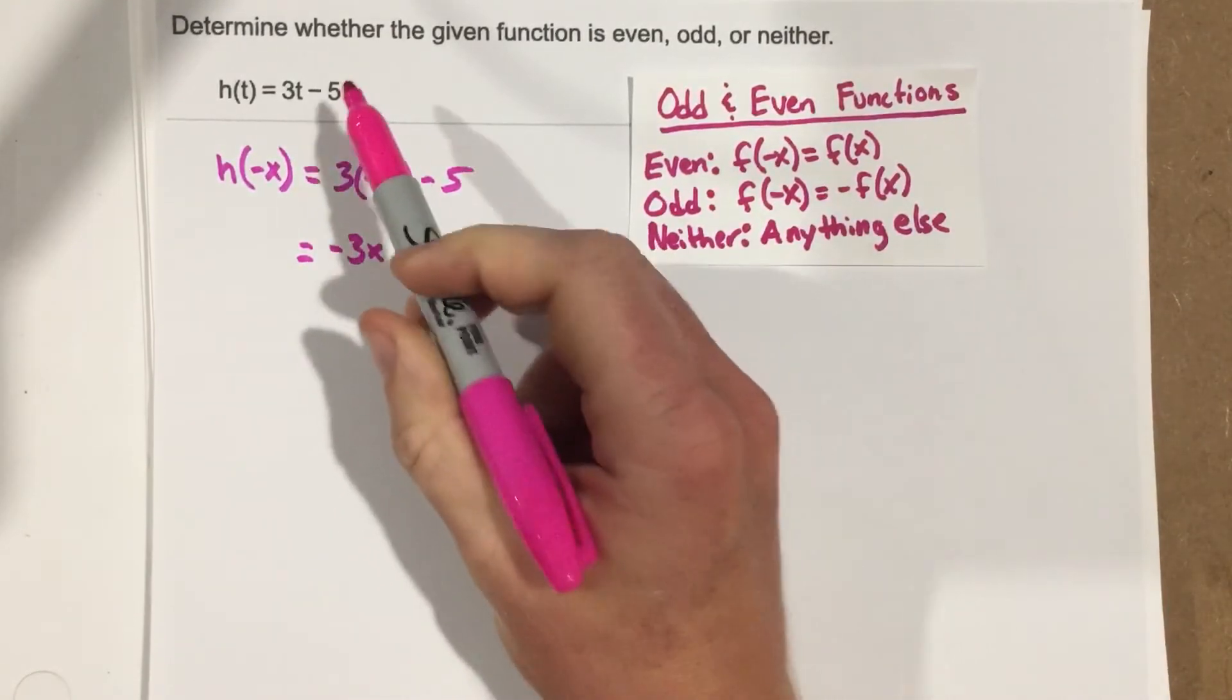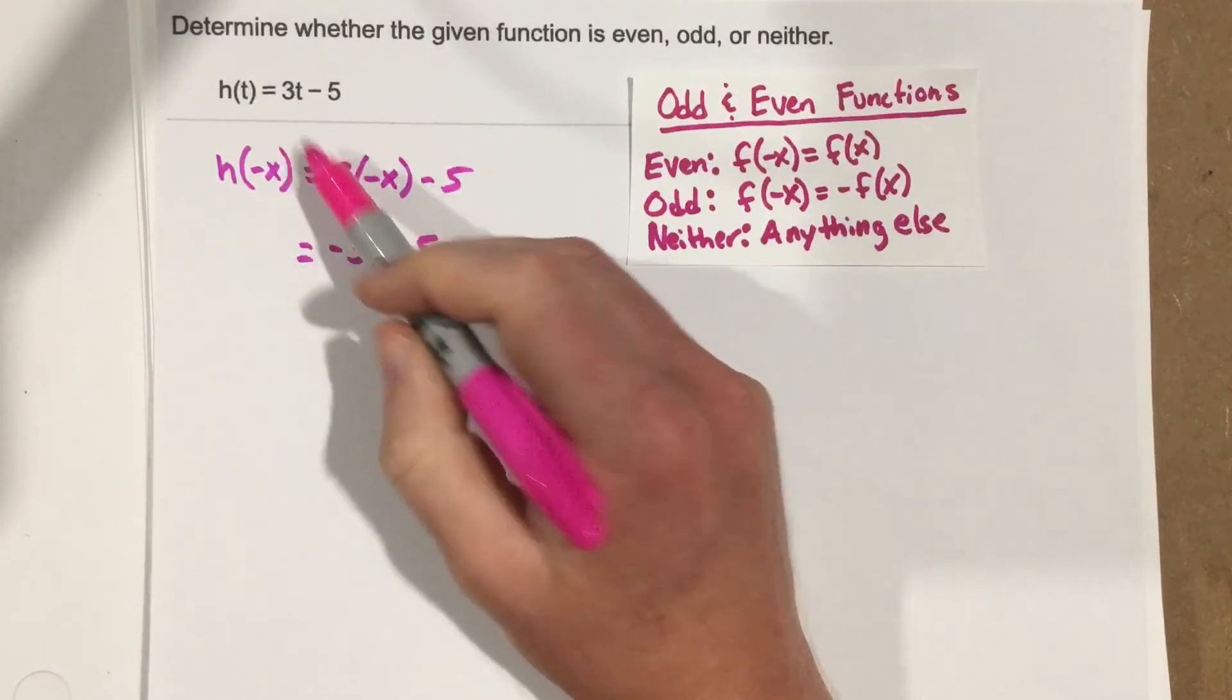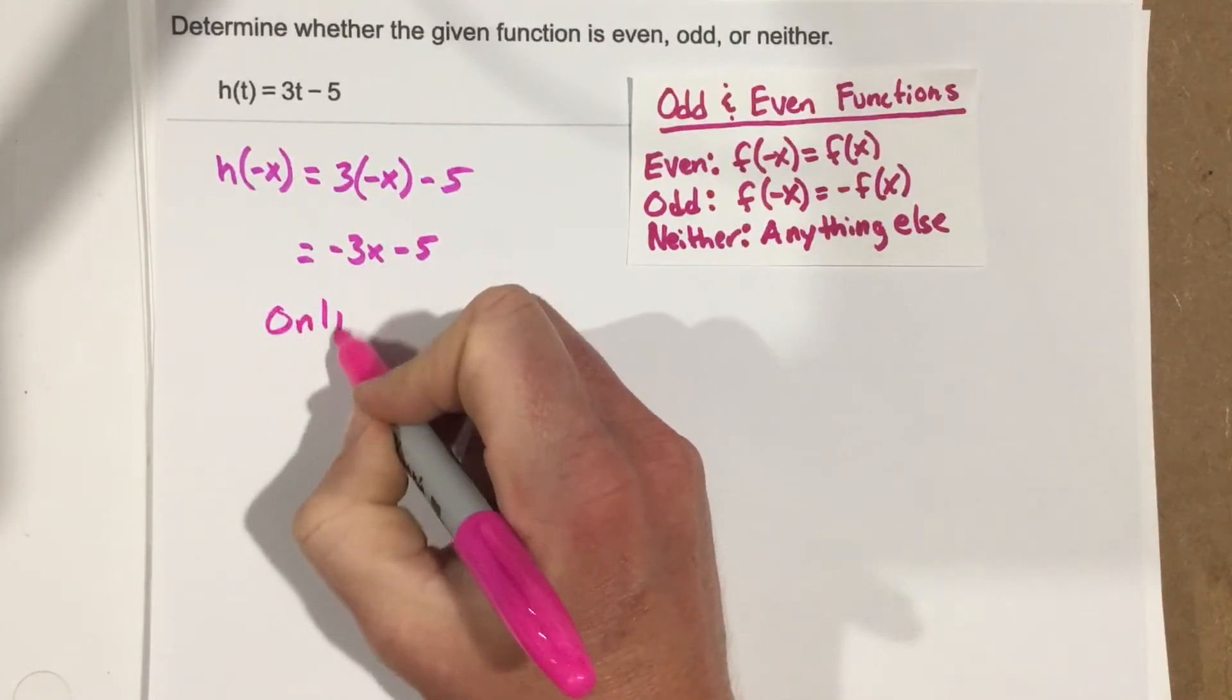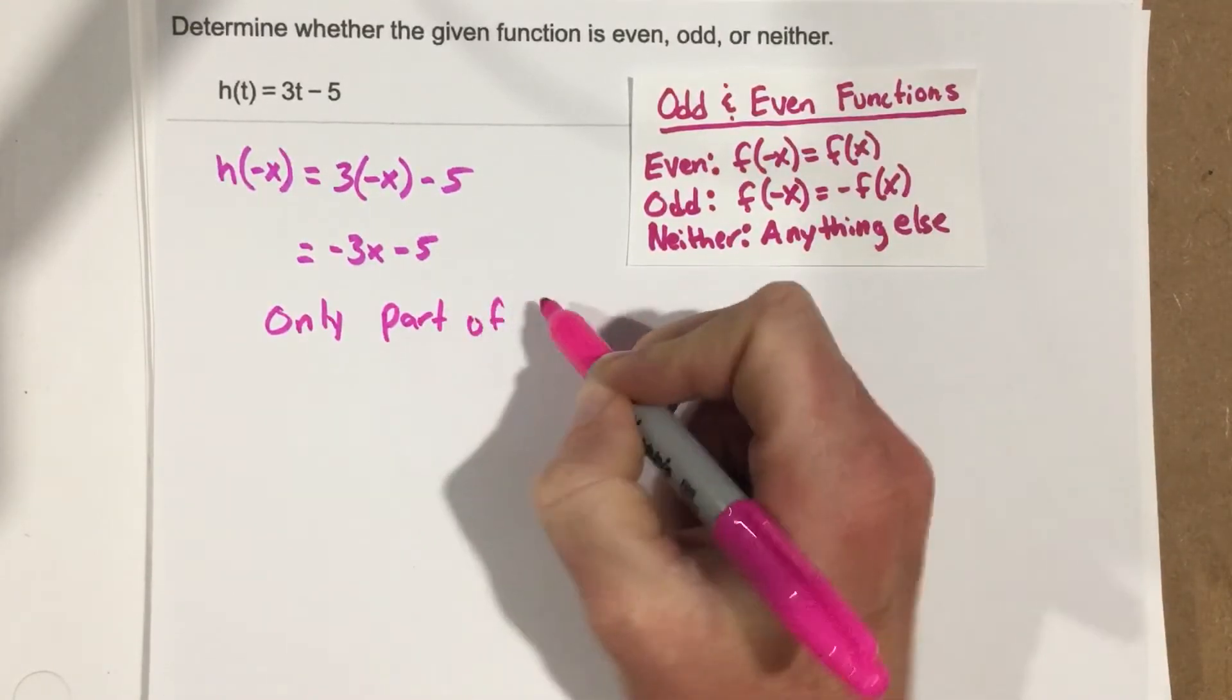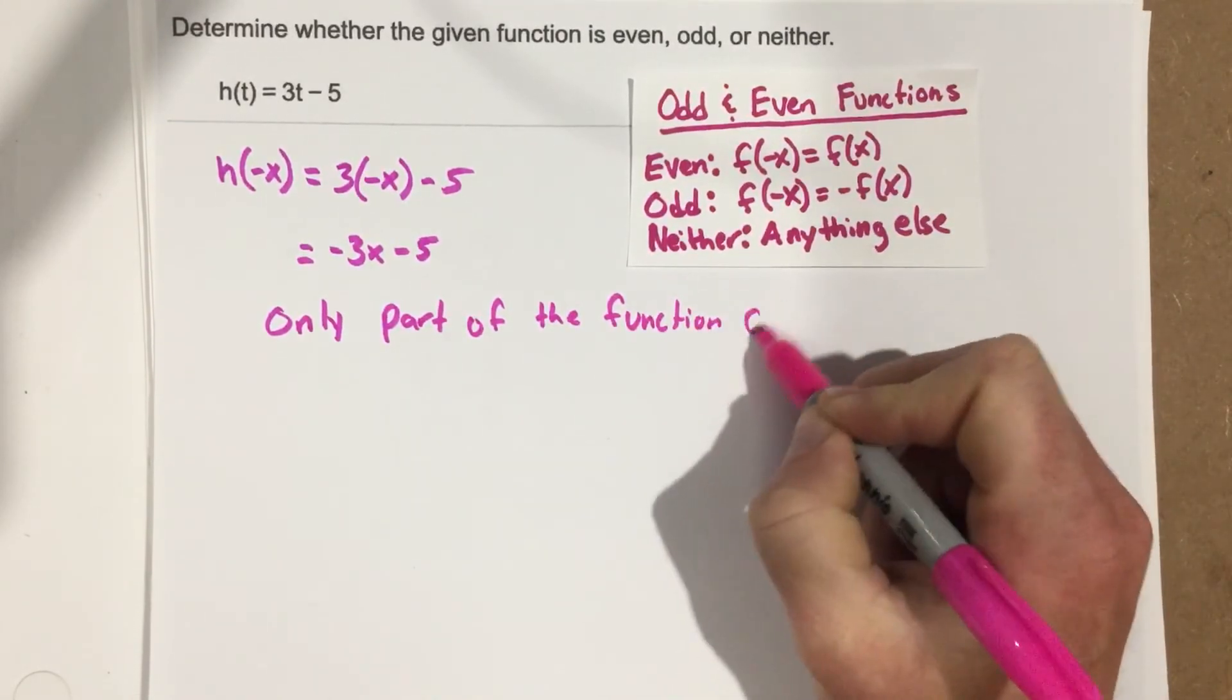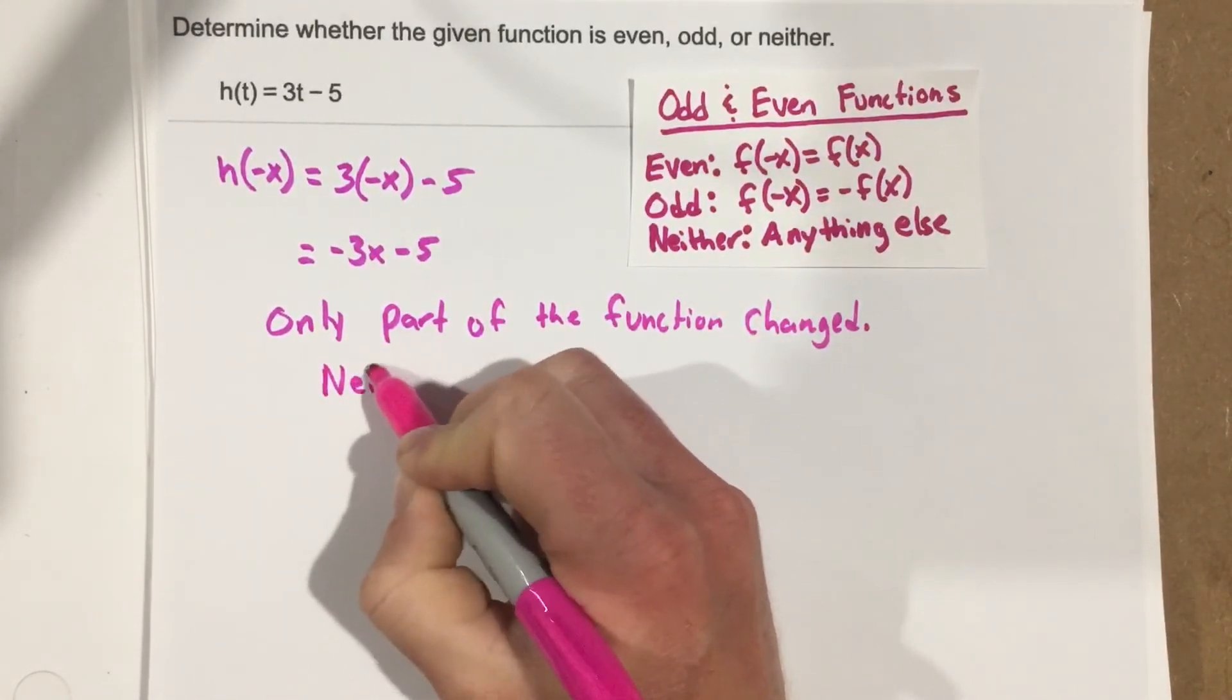Now notice that the sign for the equation here changed for the 3x part, but did not change the minus 5. So only part of the function changed. That falls into the anything else category, meaning this is a neither function.